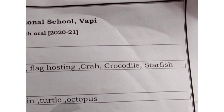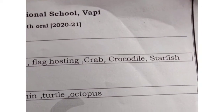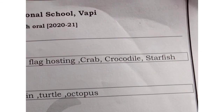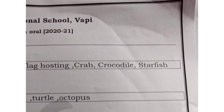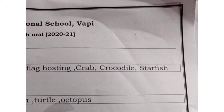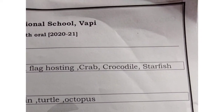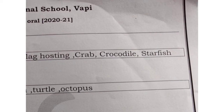Crocodile. C-R-O-C-O-D-I-L-E. And next is Starfish. S-T-A-R, F-I-S-H. Starfish. Do you know that crocodile also lives on both land and water? And starfish can live on the beach as well as in water. So these are all aquatic animals.